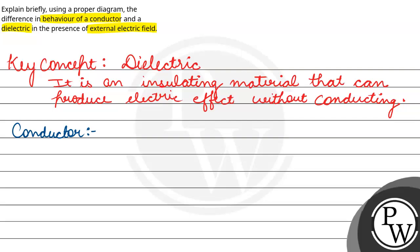So conductor ke case mein kya hotta hai? Agar hum kisi conductor ko kisi electric field ki presence mein rakhte hai, this direction mein external electric field — charge distribution hota hai. Aur joh distribution hota hai charge ka, woh is tarah se hota hai ki joh hamara conductor hai uske andar joh electric field ho, woh zero, net electric field joh ho, woh zero ho jaye.